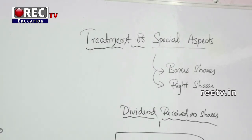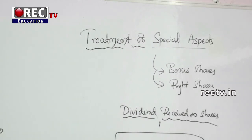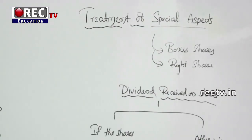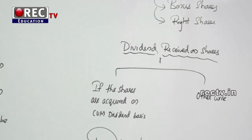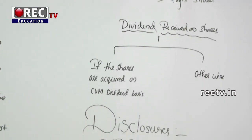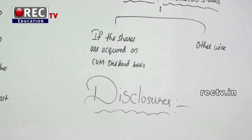For investments acquired through right shares, the investment account should be debited with the acquisition cost. When rights are sold to another person, the sale value is treated as profit and transferred to the P&L account credit side. For dividends on shares: if shares are acquired on cum-dividend basis, pre-acquisition dividend should be reduced from the investment account; otherwise, take the dividend to P&L account as income.